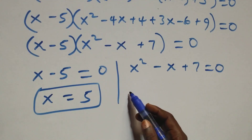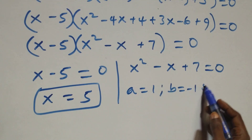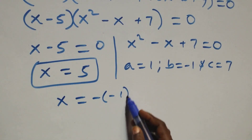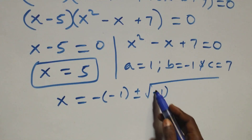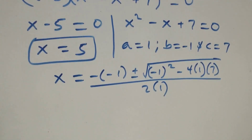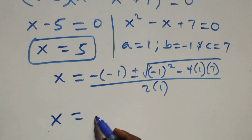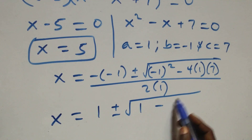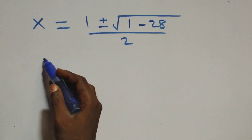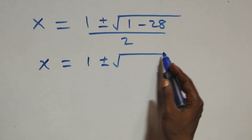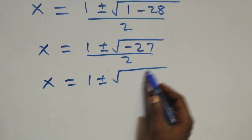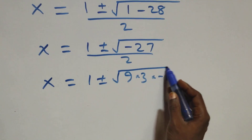For the quadratic, a equals 1, b equals minus 1, and c equals 7. Applying the quadratic formula: x equals 1 plus or minus square root of negative 1 squared minus 4 times 1 times 7, all over 2 times 1. That is 1 plus or minus square root of 1 minus 28, which is negative 27, over 2. We write this as 1 plus or minus square root of 9 times 3 times negative 1, all over 2.